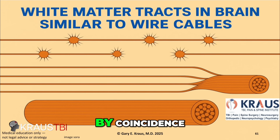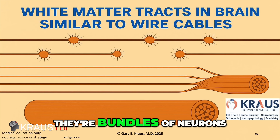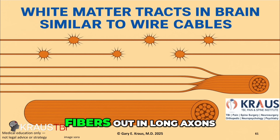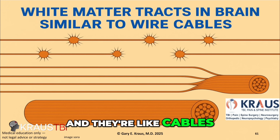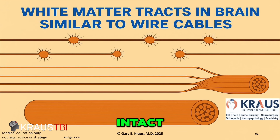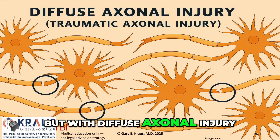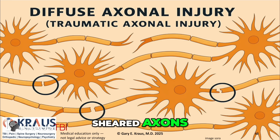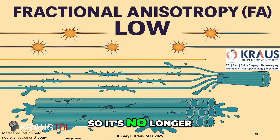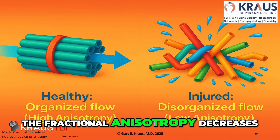By coincidence, the white matter structures in the brain are just like those tubes. They're bundles of neurons that send their fibers out in long axons, like cables through the brain. If they're all organized and intact, the FA — fractional anisotropy — is going to be high, very linear. But with diffuse axonal injury, torn and sheared axons, the fluid leaks all over — it's no longer like a tube. So that FA, the fractional anisotropy, decreases.